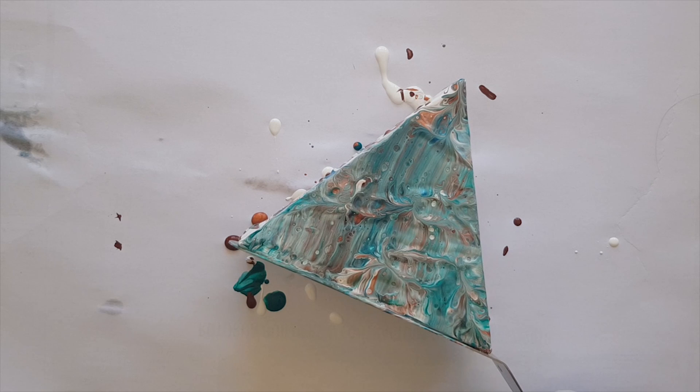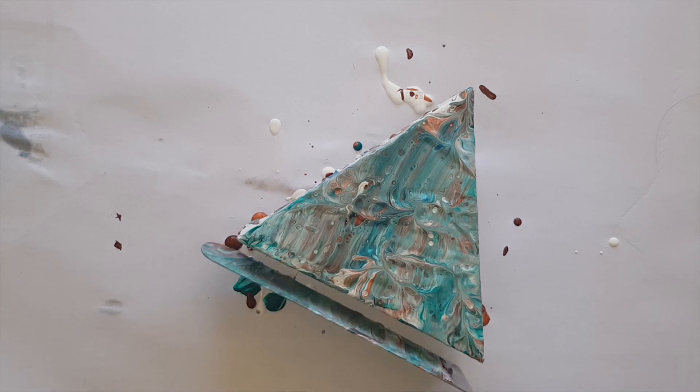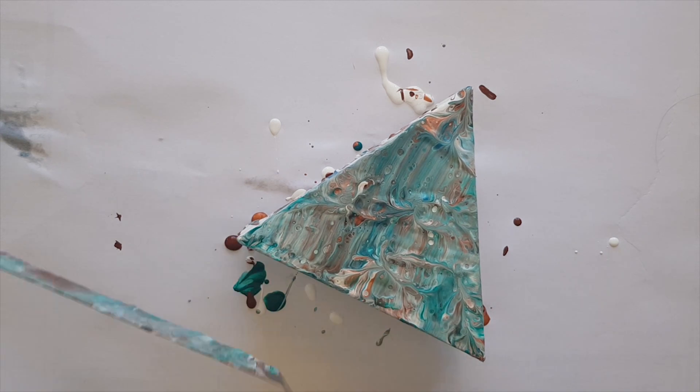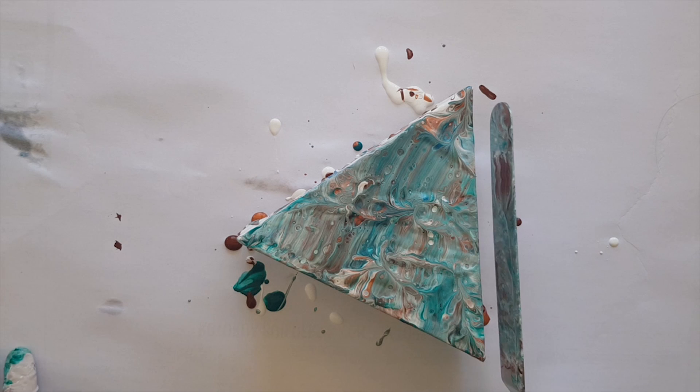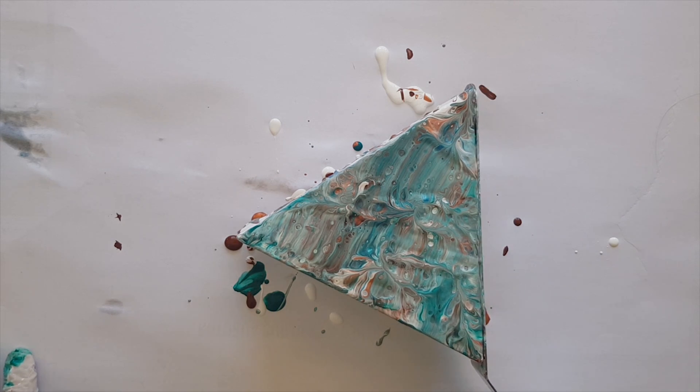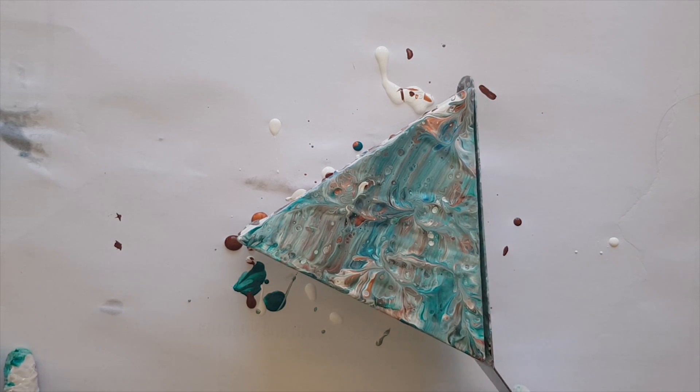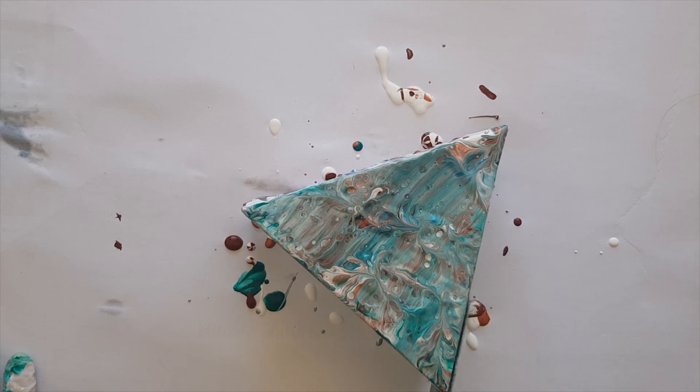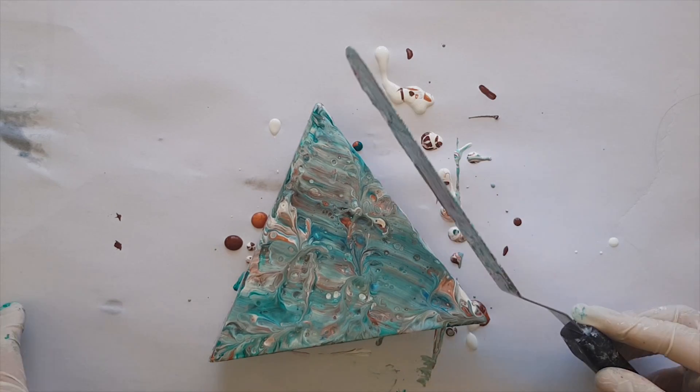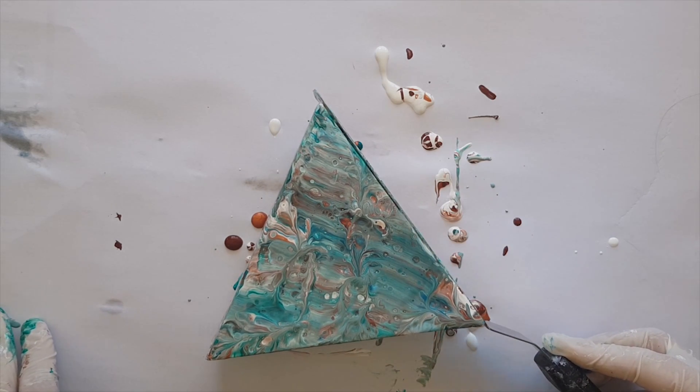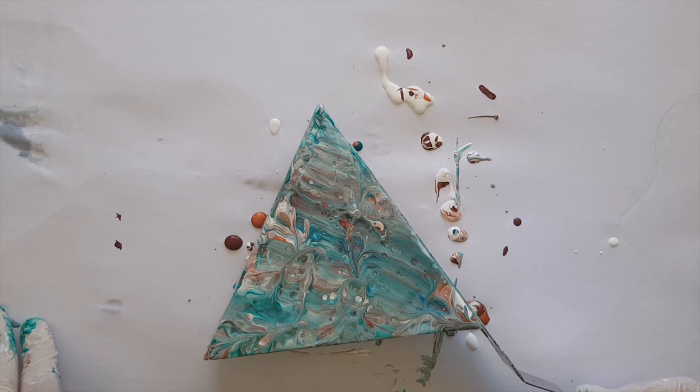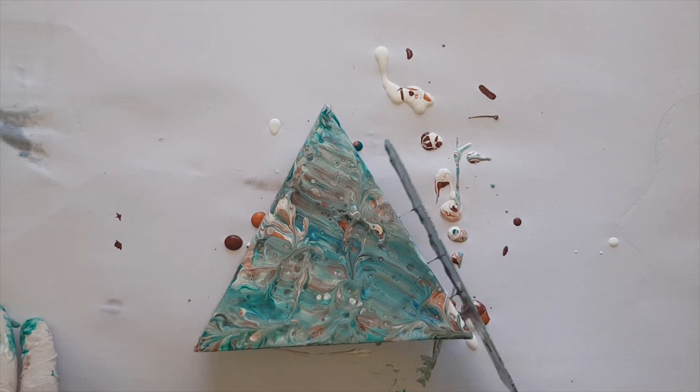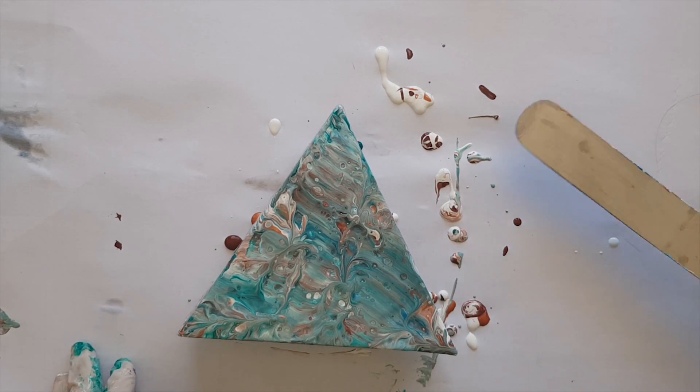I am making sure that as I go across, all the canvas is covered. The same with the sides. It's not technically a swipe as is technically known in the acrylic pouring circles. It's probably more of a mushy squiggle.